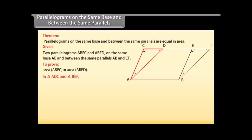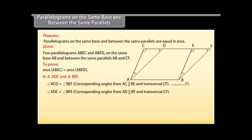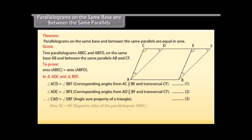In triangle ADC and triangle BEF: angle ACD is equal to angle BEF because these are corresponding angles from AC parallel to BE and transversal CF — mark it as 1. Angle ADC is equal to angle BFE because these are corresponding angles from AD parallel to BF and transversal CF — mark it as 2. Therefore, angle CAD is equal to angle EBF by angle sum property of a triangle — mark it as 3. Also, AC is equal to BE, opposite sides of the parallelogram ABEC — mark it as 4.